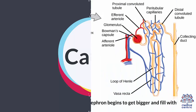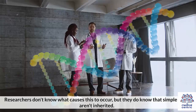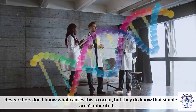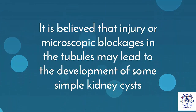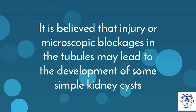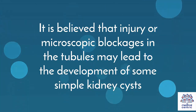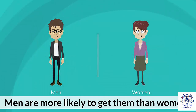Causes. Kidney cysts occur when the tube of a nephron begins to get bigger and fills with fluid. Researchers don't know what causes this to occur, but they do know that simple cysts aren't inherited. It is believed that injury or microscopic blockages in the tubules may lead to the development of some simple kidney cysts. Men are more likely to get them than women.